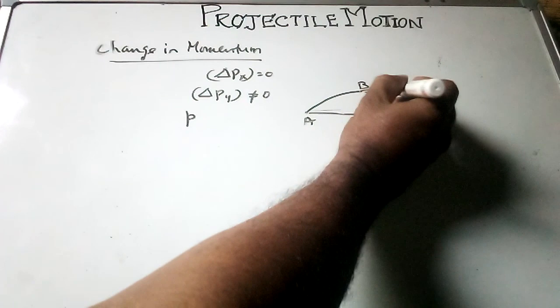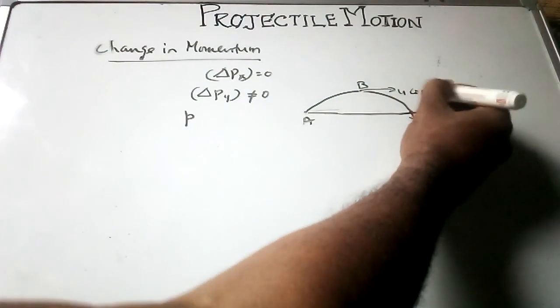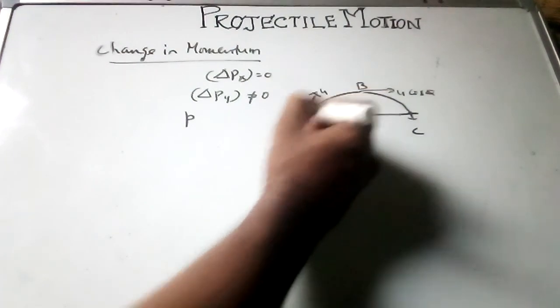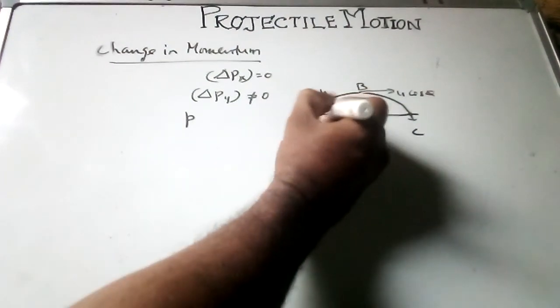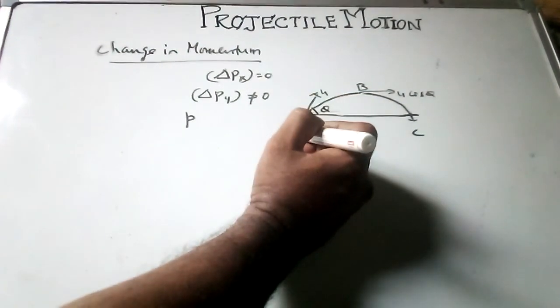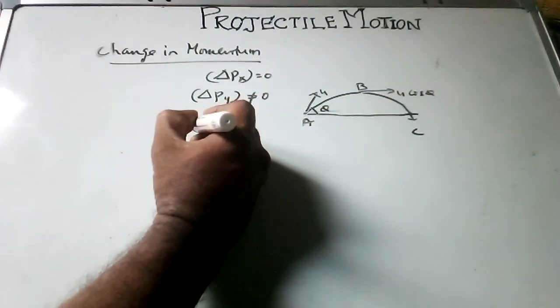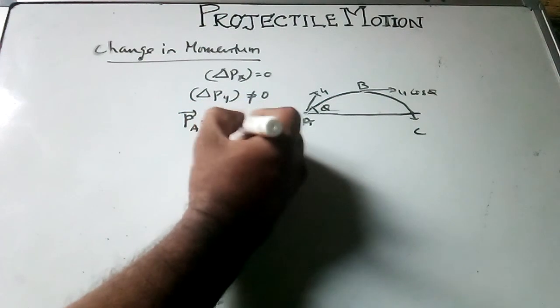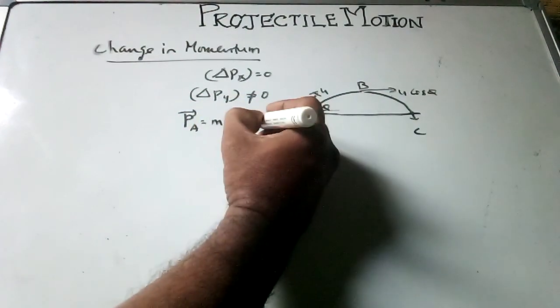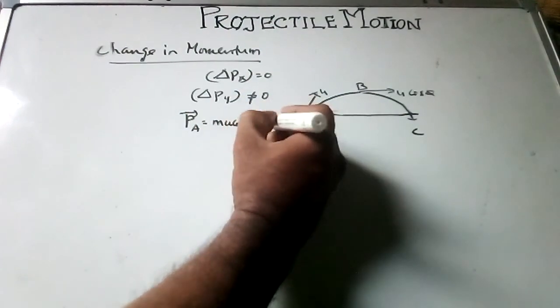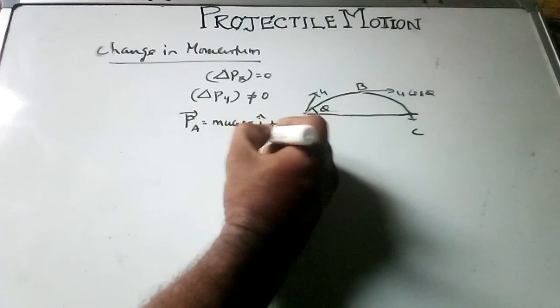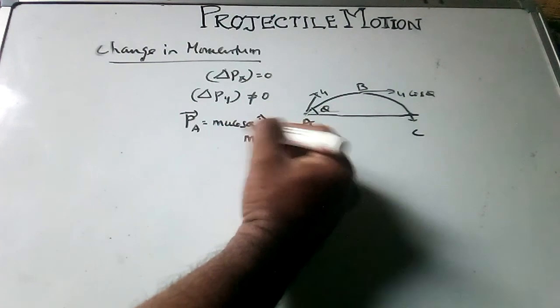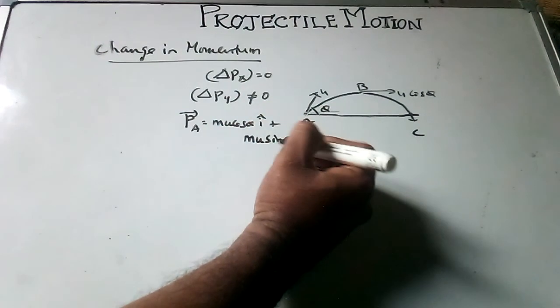The velocity of a body is horizontal only, so u cos theta. Since vertical component is zero, this is initial velocity, the direction of initial velocity. This is angle of projection. So momentum at A is equal to mu cos theta i cap plus mu sin theta j cap, because there are two components: along x-axis mu cos theta, along y-axis mu sin theta.